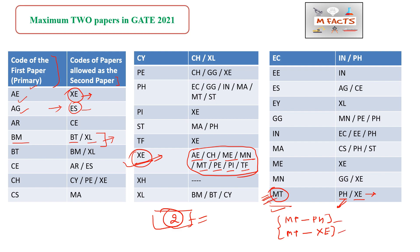For Mechanical Engineering (ME), students can write only XC (General Science) as the second paper. So for MT specifically, you can either write MT and PH, or MT and XC. You should not have any confusion — you can opt for only two subjects, and these are the defined combinations from which you can choose.